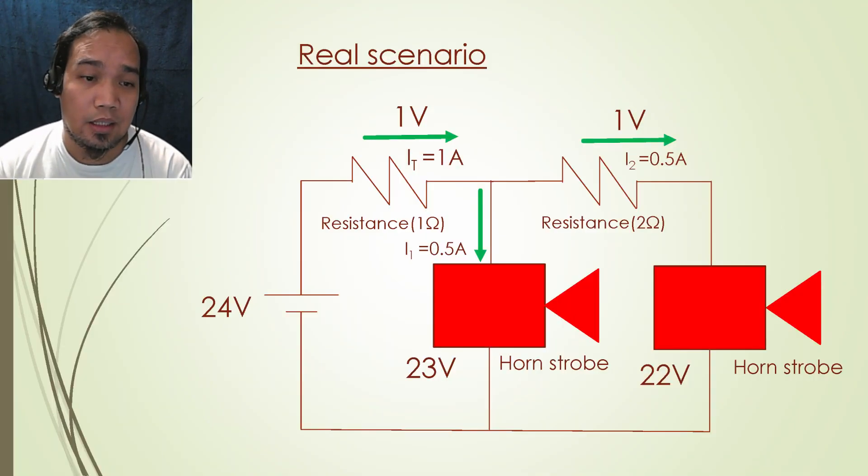Now here is another real scenario from the fire alarm installation. In this illustration there are two number of horn strobe connected from the voltage source. To calculate for the voltage drop, the type of the circuit to be considered is series-parallel. Horn strobes are connected mainly in parallel while the cable resistance is in series prior to the device.